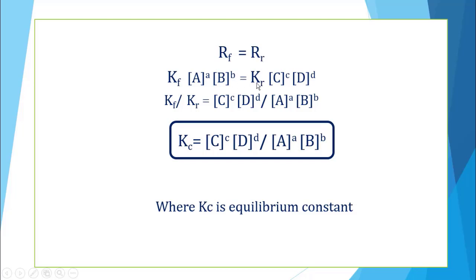Rate of forward reaction RF is equal to rate of reverse reaction RR at equilibrium position. In place of RF we put KF times concentration of A times concentration of B, and in place of RR we put KR times concentration of C times concentration of D. Next, we bring KR to the left side, so KF over KR ratio is formed. Then concentration of C times concentration of D divided by concentration of A times concentration of B gives us the equilibrium constant expression. This ratio KF/KR is represented as KC, that is the equilibrium constant.